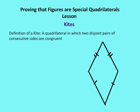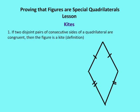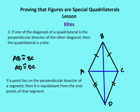Now let's talk about kites. The definition of a kite is a quadrilateral in which two disjoint pairs of consecutive sides are congruent. Number one: if two disjoint pairs of consecutive sides of a quadrilateral are congruent, then the figure is a kite — by definition. Number two: if one of the diagonals of the quadrilateral is the perpendicular bisector of the other diagonal, then the quadrilateral is a kite.